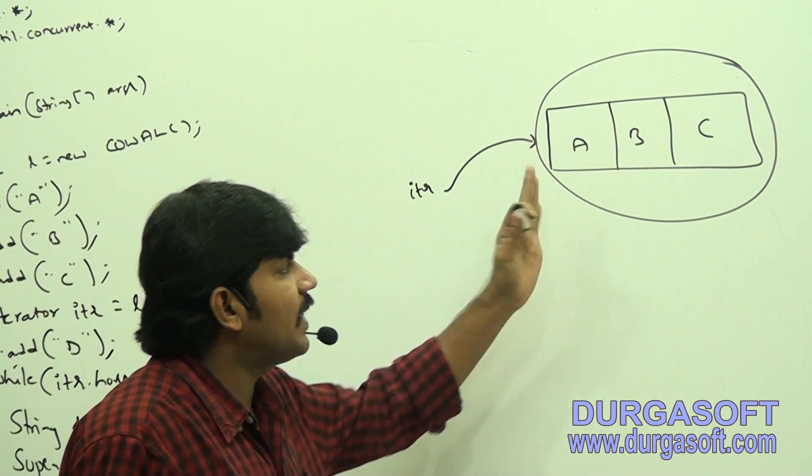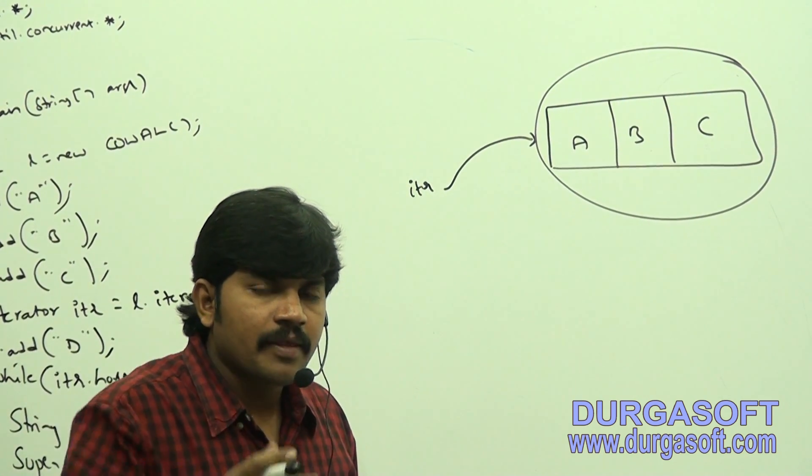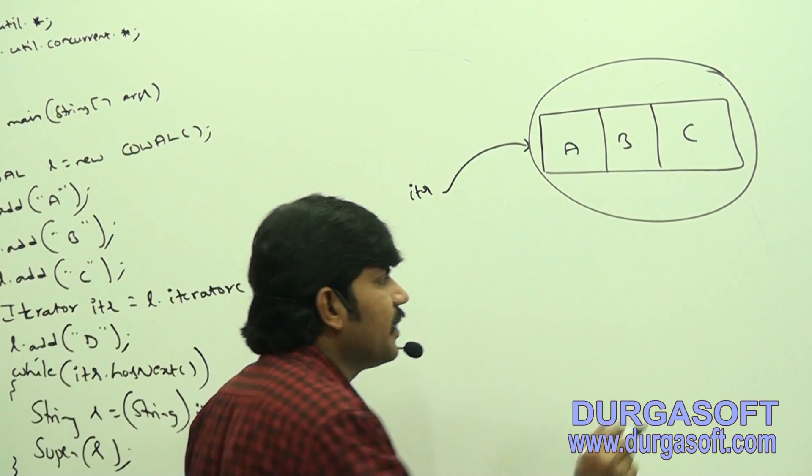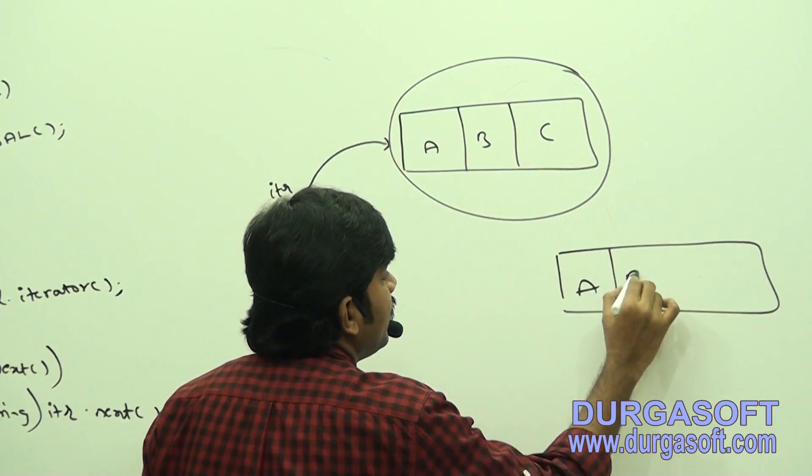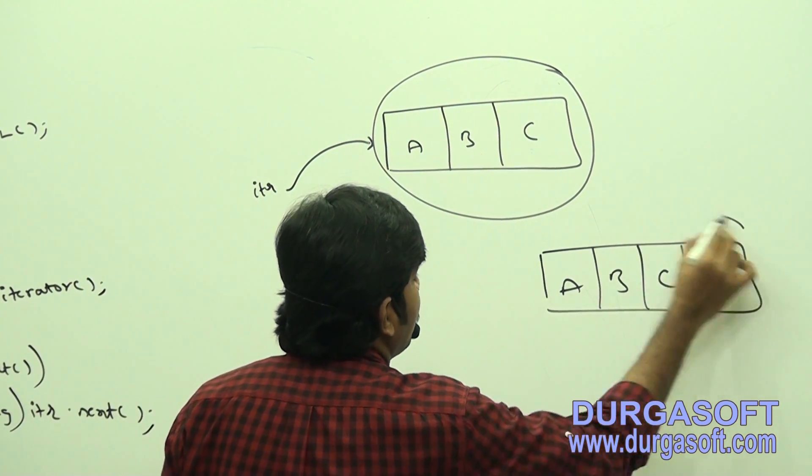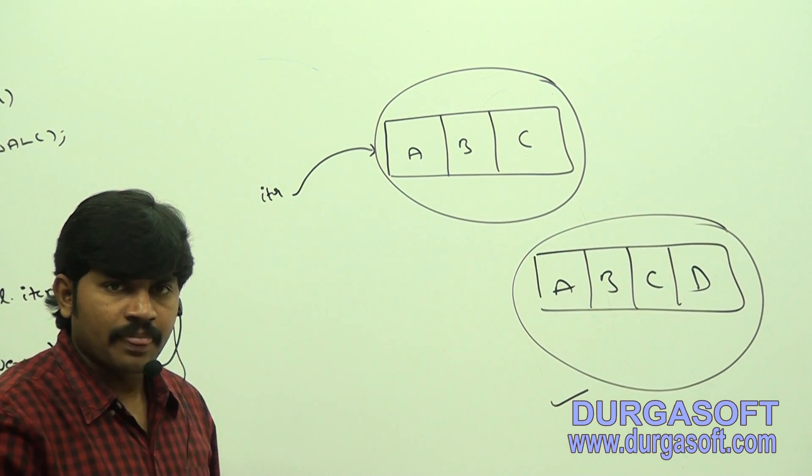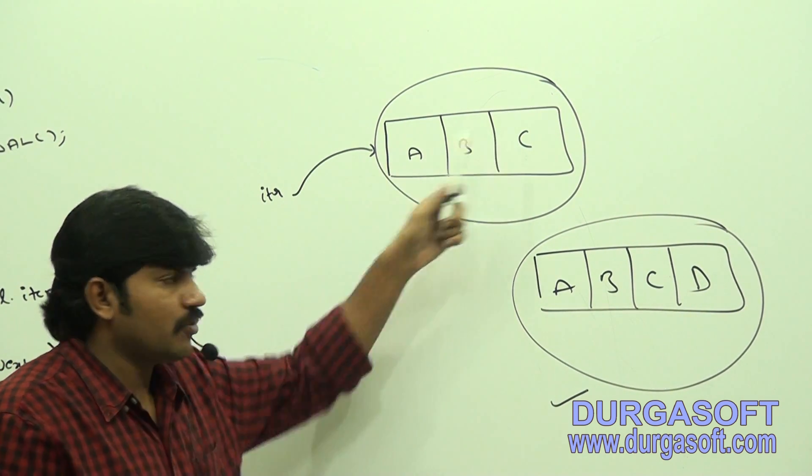Now, I am trying to add D. If I am trying to add D, for every update operation, a new copy will be created. That's why now, with that A, B, C, D, with that update, a new CopyOnWriteArrayList object is created. But iterator pointing to old one only.